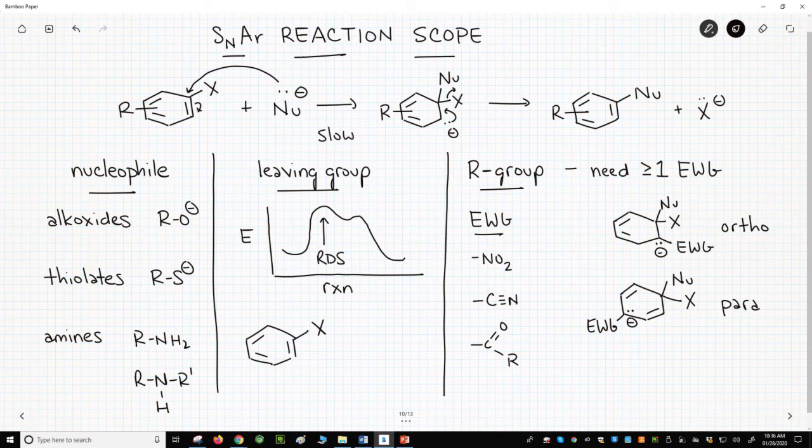The second step, when the leaving group leaves, is quick regardless of the identity of the halide. Fluoride, although not the best leaving group, is the best halide for the SNAR. Fluoride is the most electronegative of the halides, and makes the aromatic ring more electrophilic for attack in the first step.